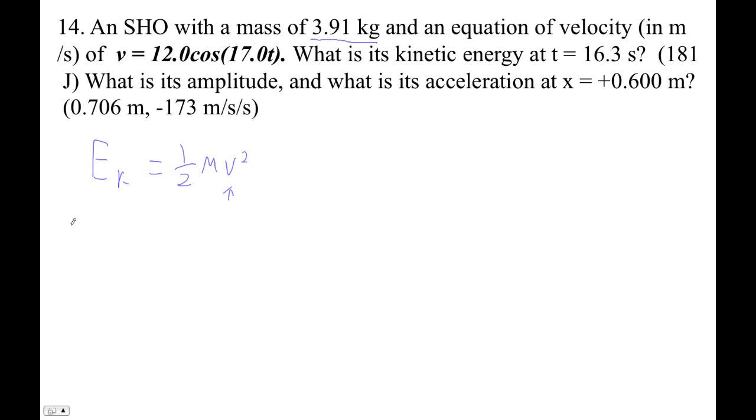Okay, so let's see. V is 12.0 cos 17.0 radians per second times 16.3, right? Here we go. Uber parentheses, right? Okay, so literally I'm just going to plug that in. Let's get the velocity. 12 cos. Oh, make sure you are in radians. Okay, you really want to be in radians.